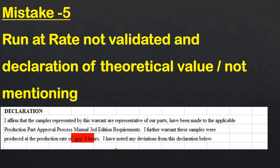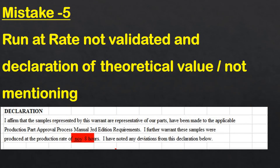Mistake number five is very important: sometimes people miss mentioning the run-at-rate, or they calculate it theoretically and mention that theoretical value in the PSW. This is absolutely wrong because whatever run-at-rate you mention will be demanded by the customer under any conditions — and you must deliver that quantity without any quality constraints. The run-at-rate must be practically evaluated through an actual eight-hour production run. Excluding losses, rejections, and everything, the final output of eight hours must be properly validated practically, and that quantity must be mentioned as the run-at-rate. It must not be theoretical.